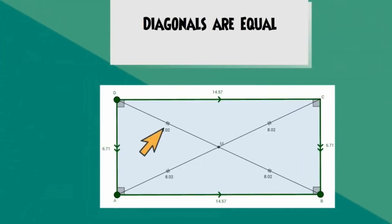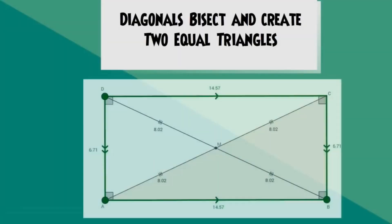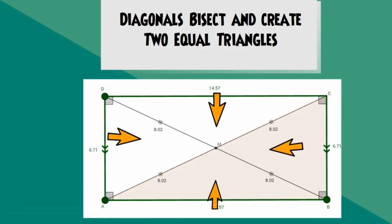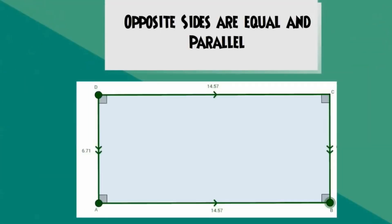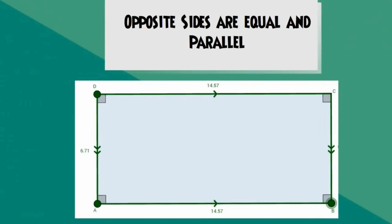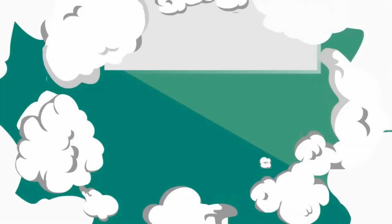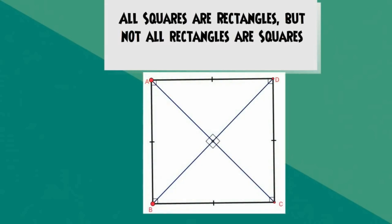In addition, a rectangle has four right angles and the sum of these interior angles adds to 360 degrees. The diagonals of a rectangle are of equal length. The diagonals also bisect and create two pairs of equal triangles. Opposite sides of a rectangle are equal and parallel. All squares are rectangles, but not all rectangles are squares.